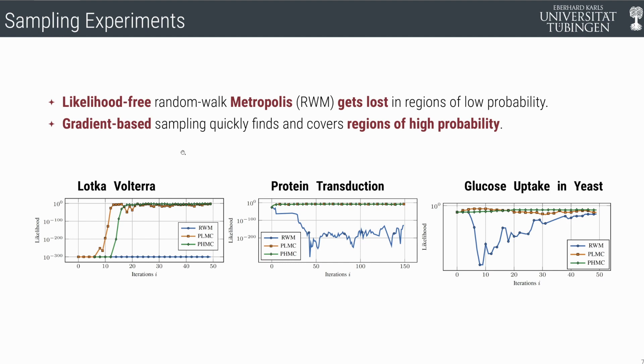Here you see our results for sampling on three benchmark systems: Lotka-Volterra, protein transduction, glucose uptake in yeast. The blue line is the likelihood-free random walk Metropolis method. The orange and the green line are preconditioned Langevin and preconditioned Hamiltonian Monte Carlo. The preconditioning is done with the Hessian, of course.